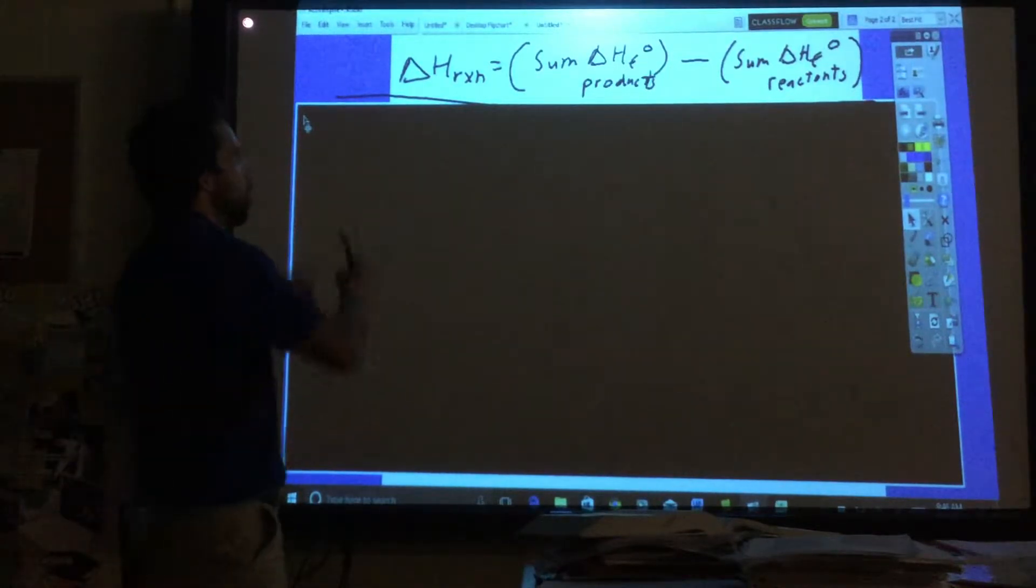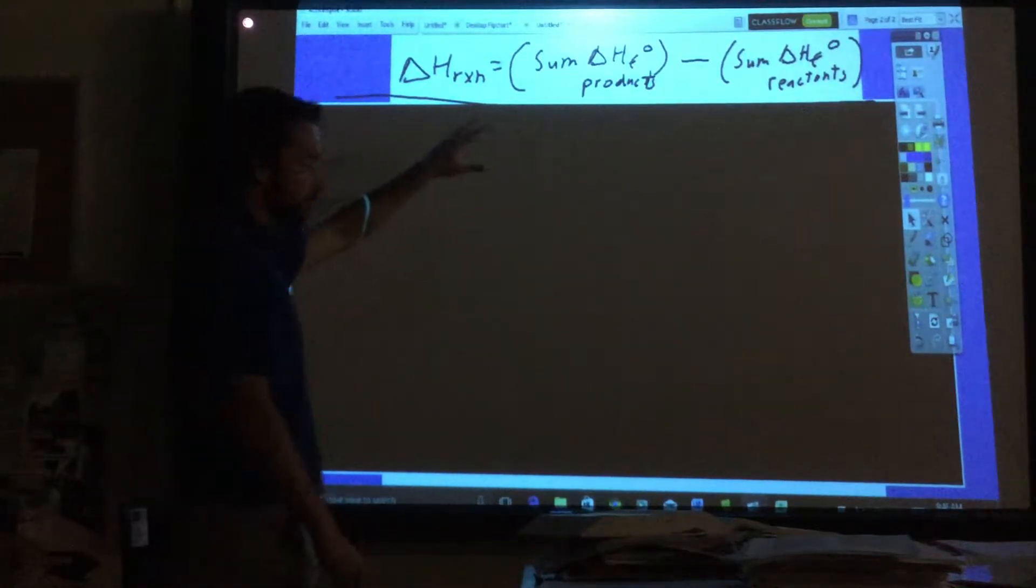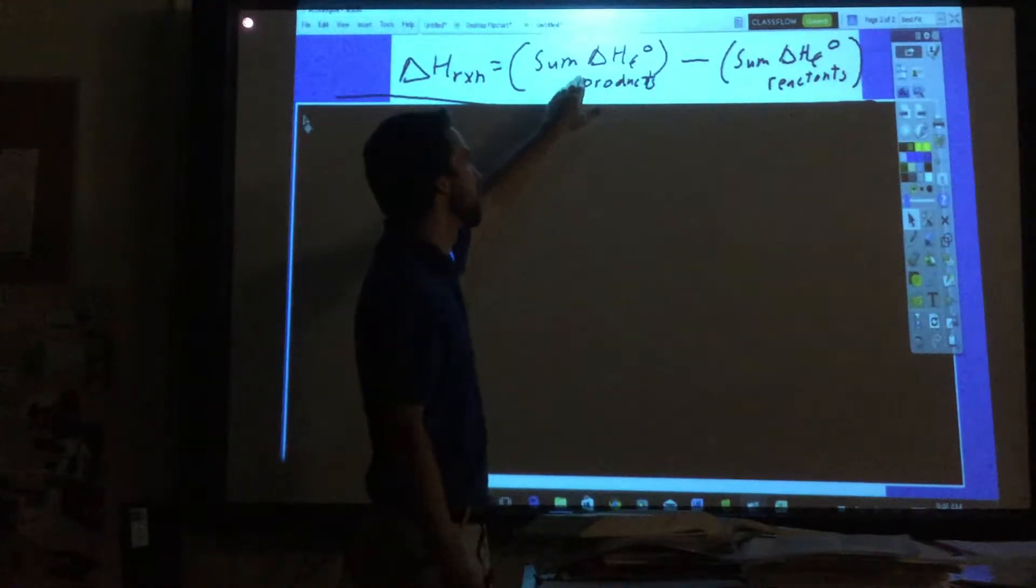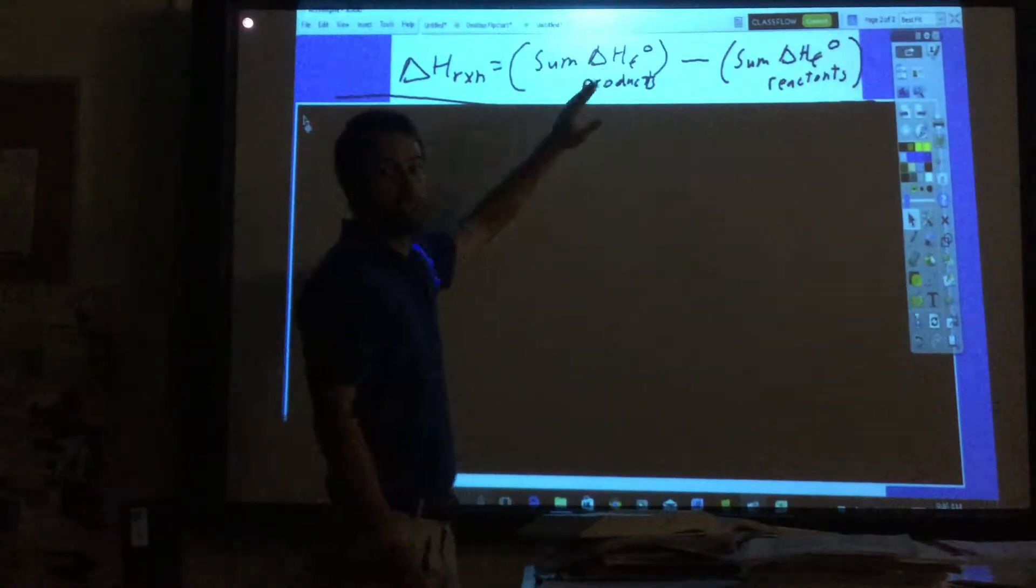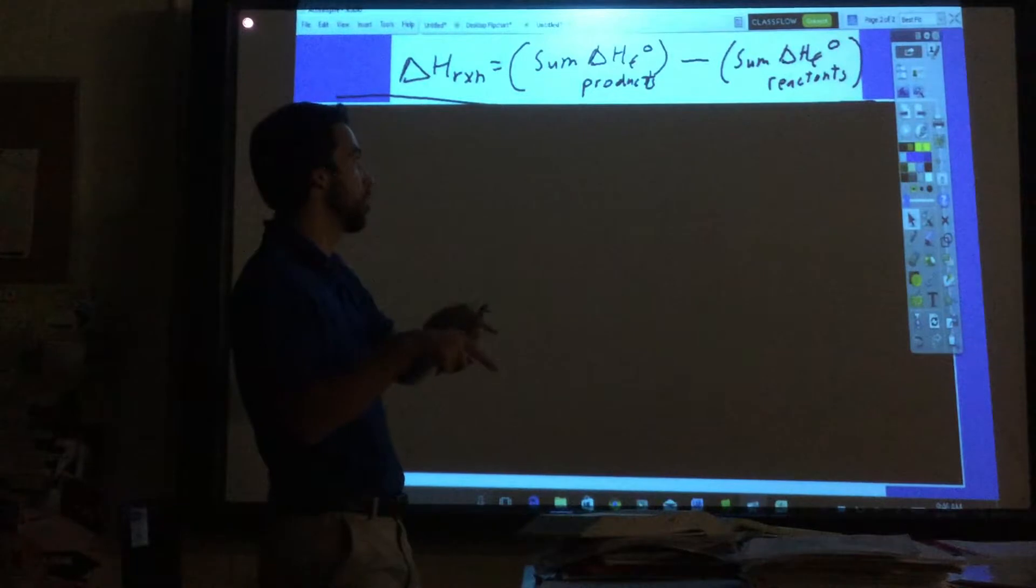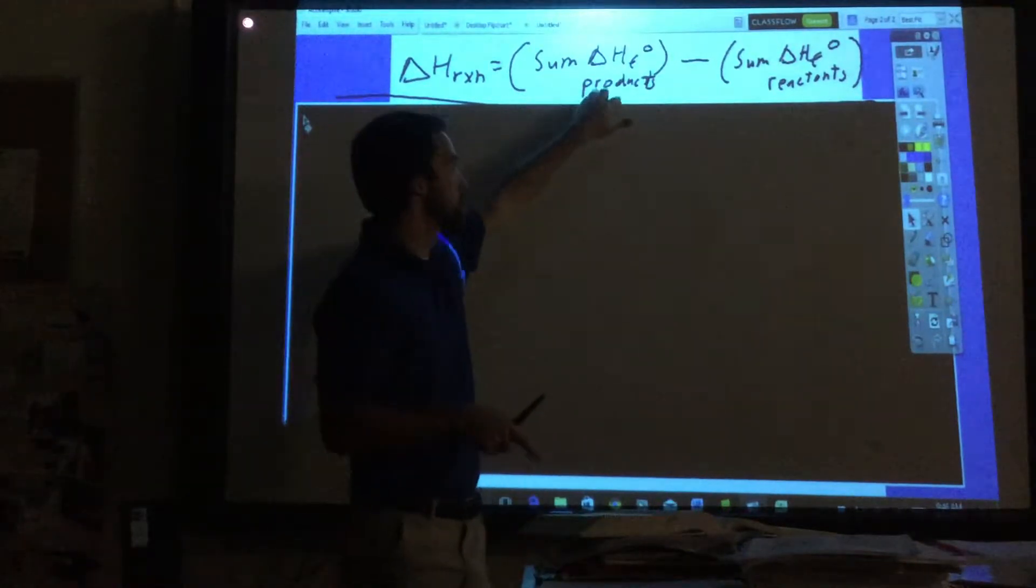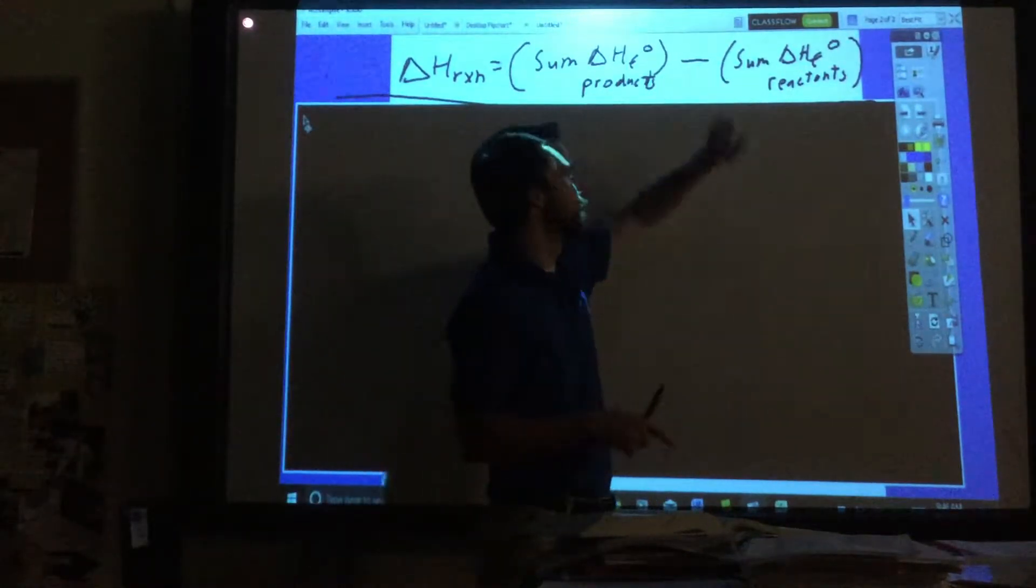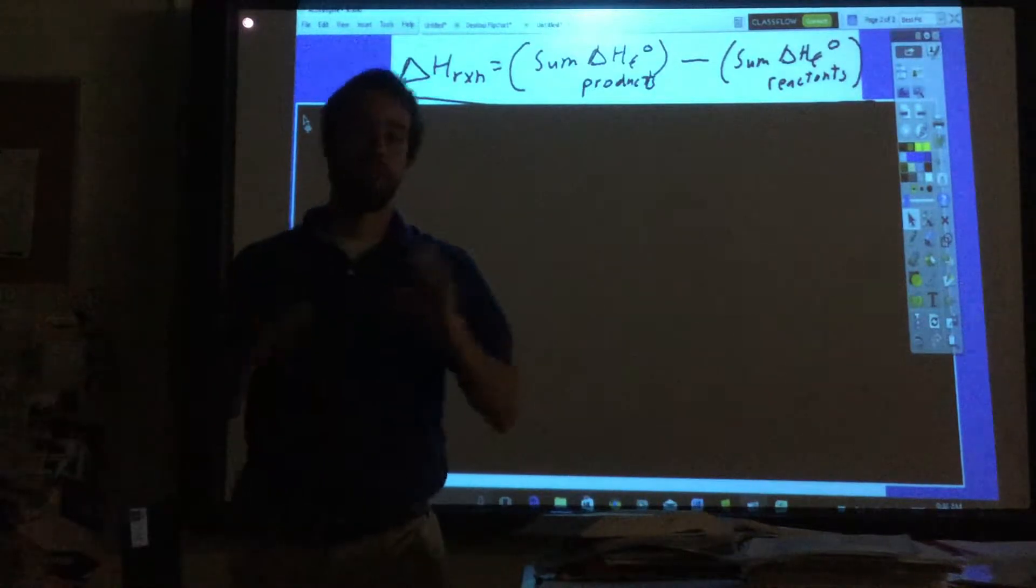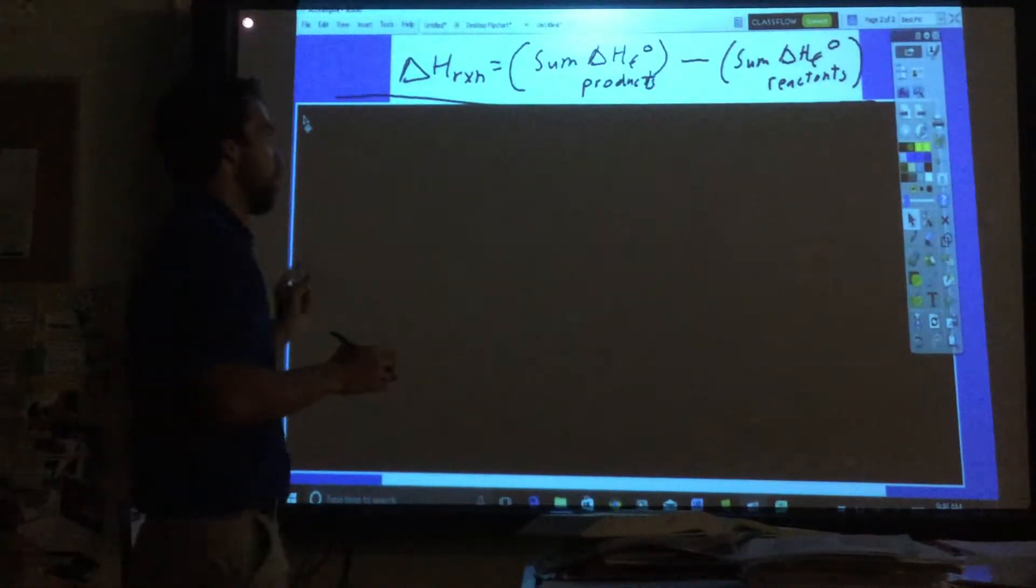We're going to use that equation - basically the sum of the Delta Hfs that's in that table in our book for the products minus the sum of the Delta Hfs of the reactants. Products minus reactants.